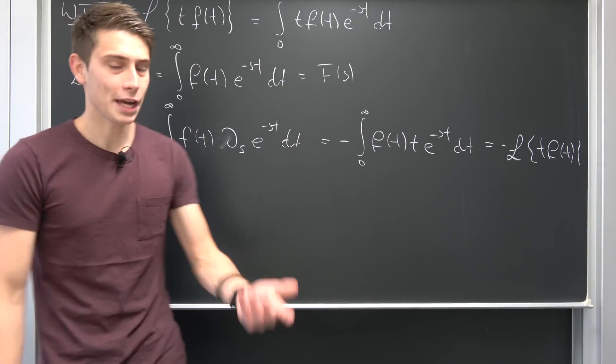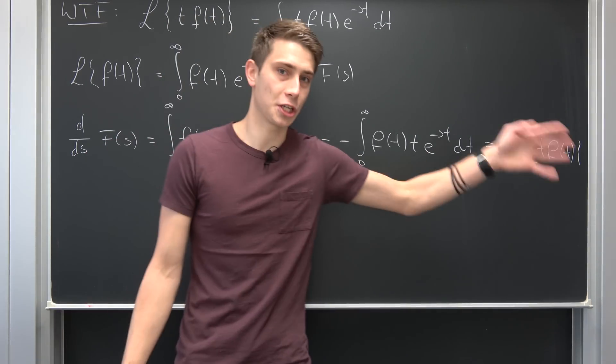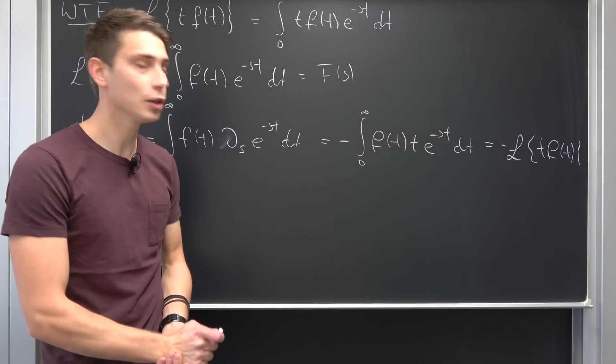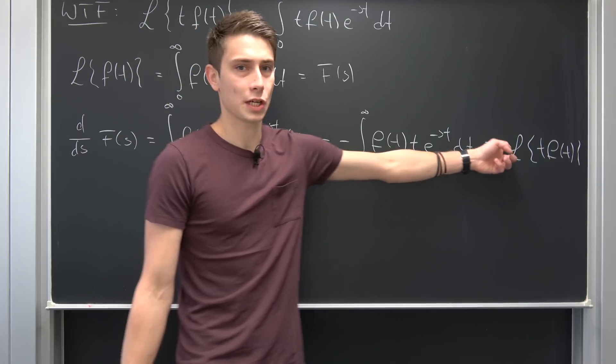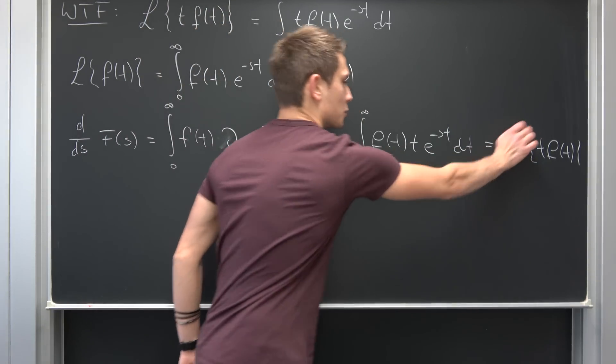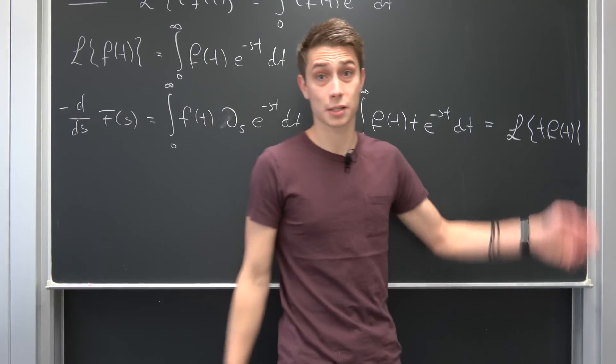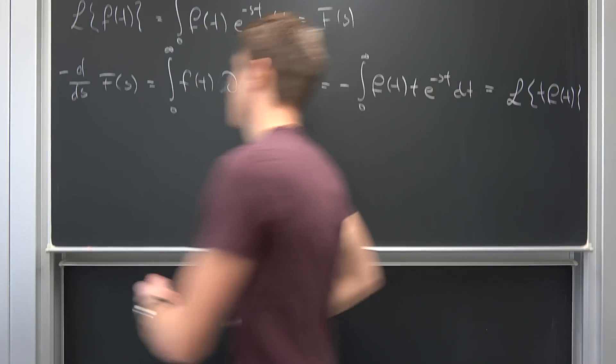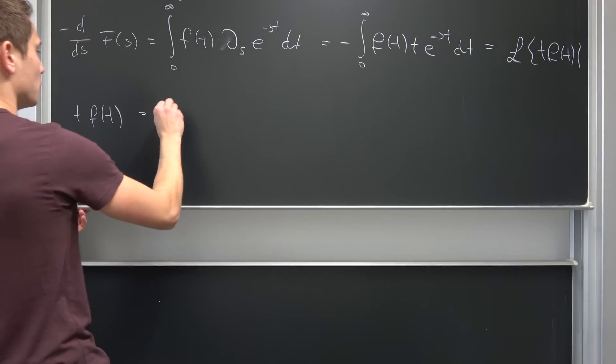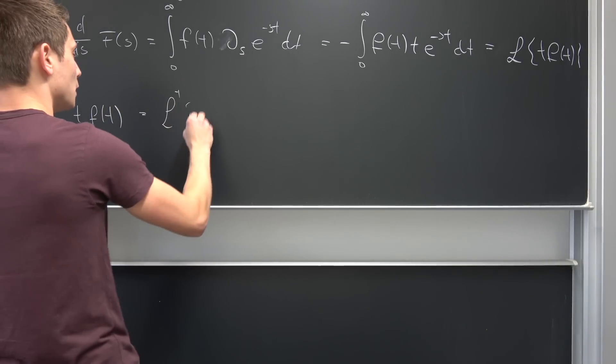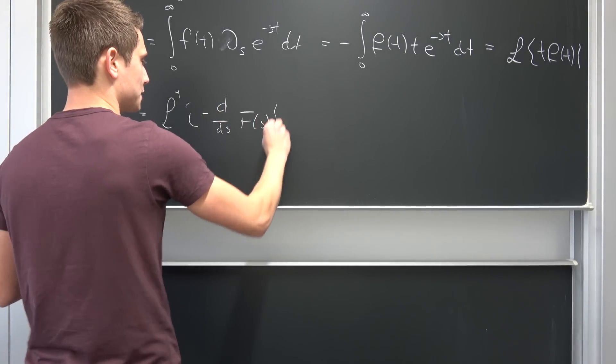Now we have ways to take the inverse Laplace transform on both sides if it's bijective on a certain domain or interval, and then we have a new expression for f(t). Why not multiply both sides by negative 1, so this becomes positive, and now use the inverse Laplace transform on both sides? We end up with t*f(t) being equal to the inverse Laplace transform of -d/ds F(s).